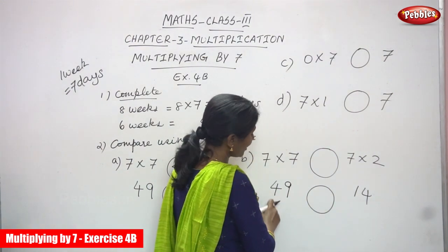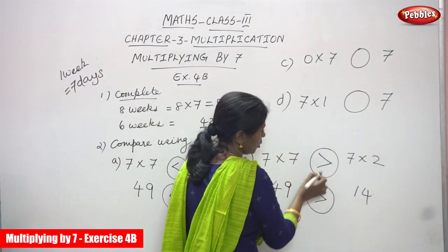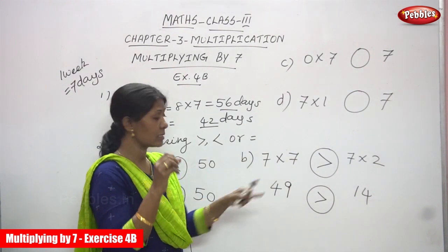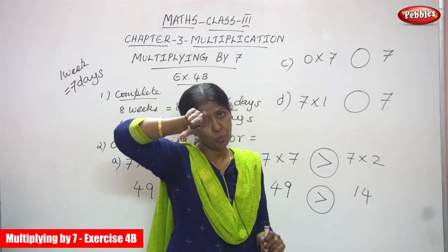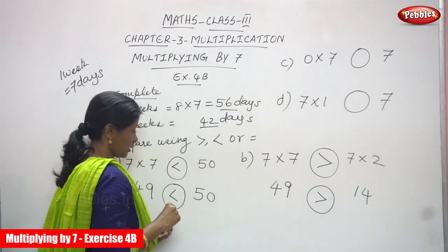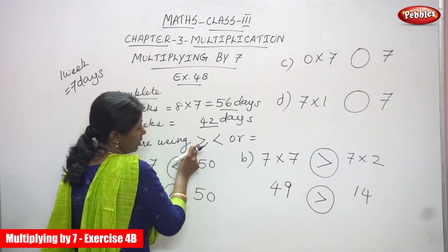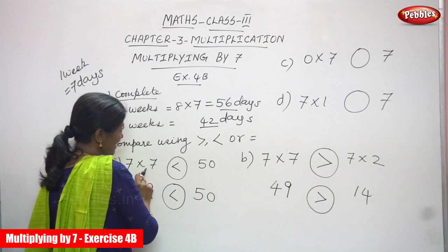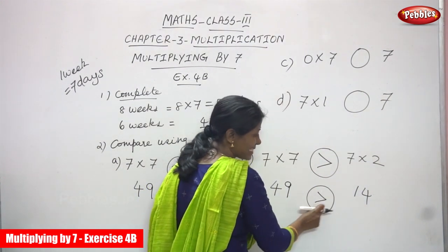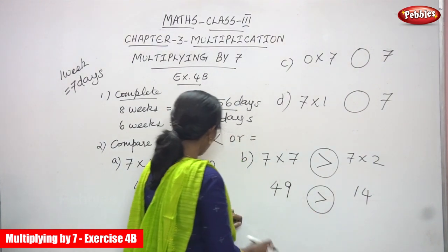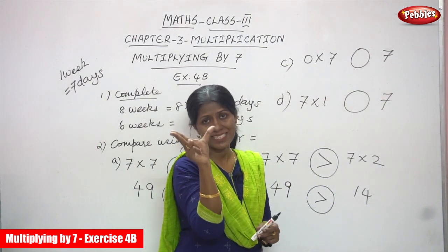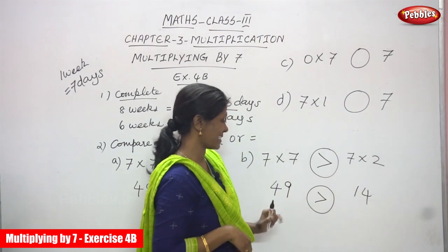14 is lesser compared with 49, so 49 is greater than 14. This is a greater sign. If the mouth is broader, it is a greater sign. If the mouth is narrow, it is a lesser sign. So narrow mouth means lesser, broader mouth means greater. So 49 is greater than 14.